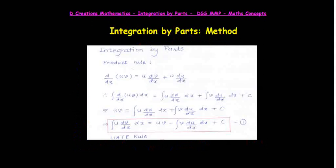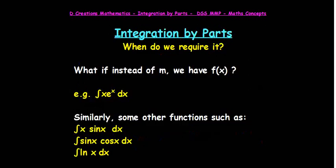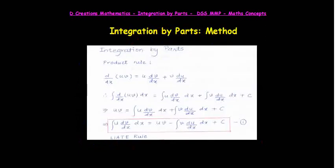If you see some examples we have seen earlier, that is integral of x*e^x dx or integral of x*sin(x) dx, in each of the cases you have to choose one as u and other as dv/dx so that it comes in this form and even the choice is not random.